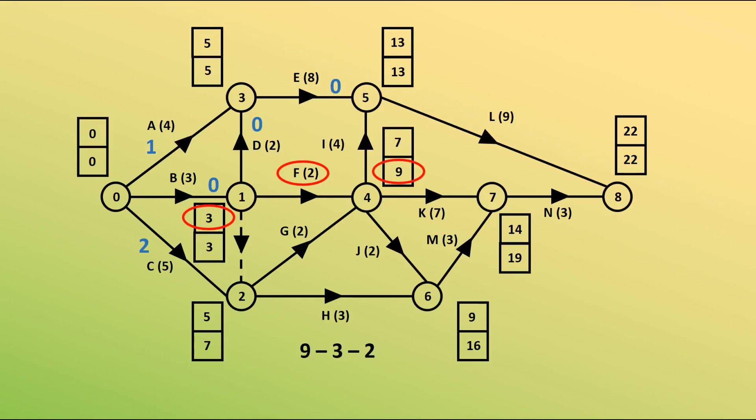F, 9 take away 3 take away 2 is 4. G, 9 take 5 take 2 is 2. H, 16 minus 5 minus 3 is 8. For i, 13 take away 7 take away 4 is 2. J is 7. K is 5. L is 0. M is 7. And finally, n is 5.